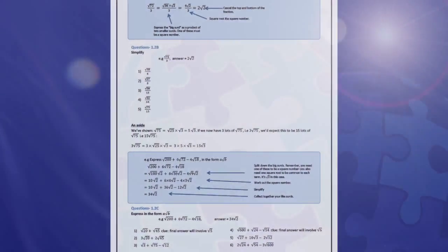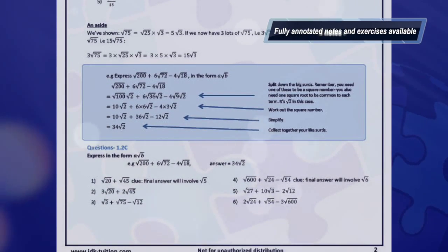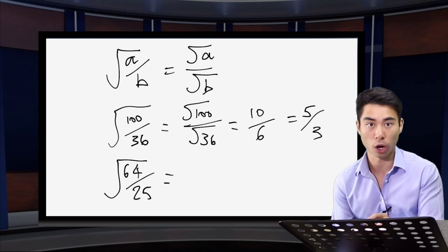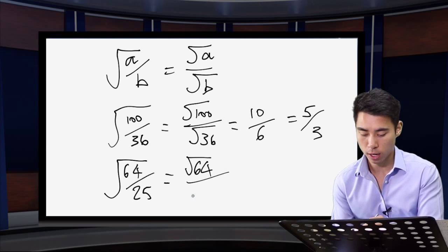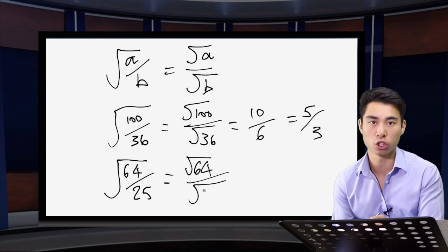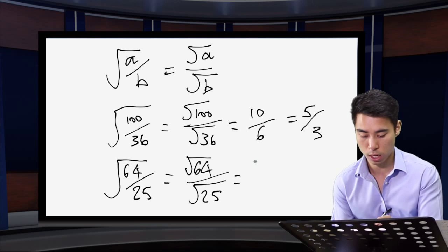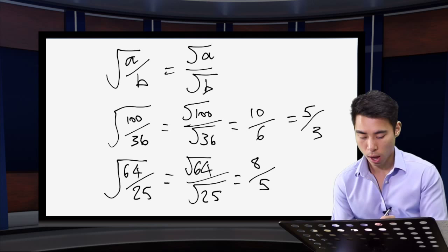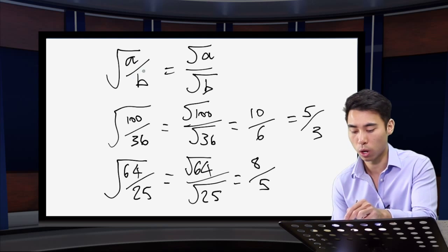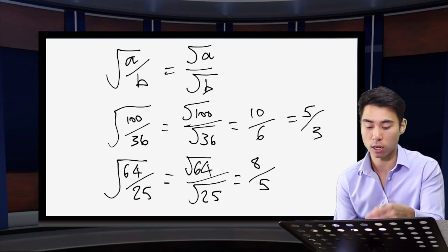Another example: if I have the square root of 65 over 25, I can split this up so I have the square root of the numerator over the square root of the denominator, and work out each of those separately. That is our first rule — breaking up this fraction underneath the square root sign so we're looking at the numerator and denominator separately. This is a technique we also saw during our laws of indices work.